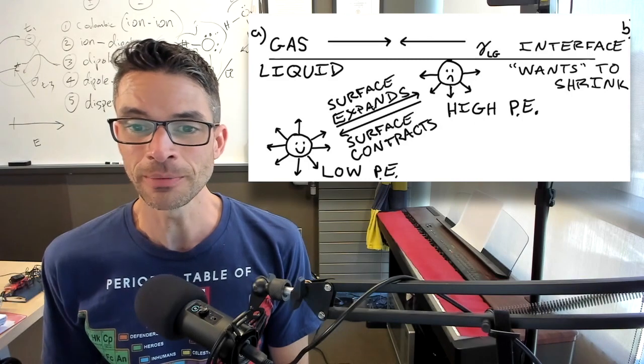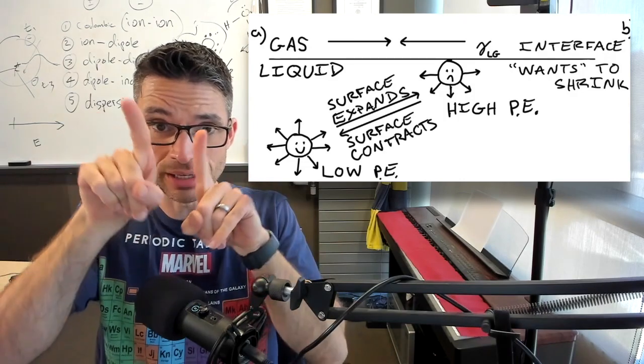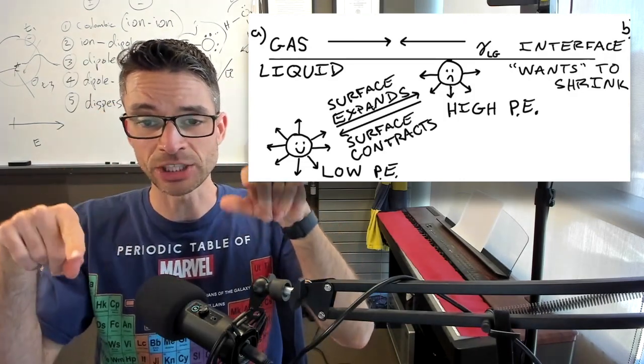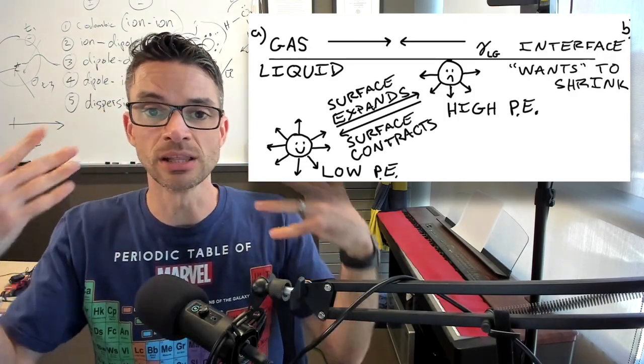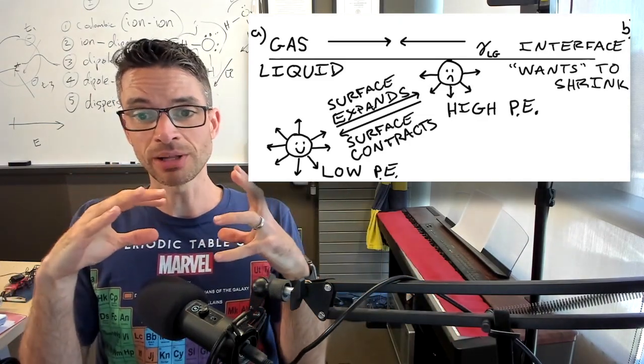And that molecule has all kinds of van der Waals forces with all of the other molecules in every other direction. So its potential energy is lowered by the fact that it is interacting with all these other molecules.